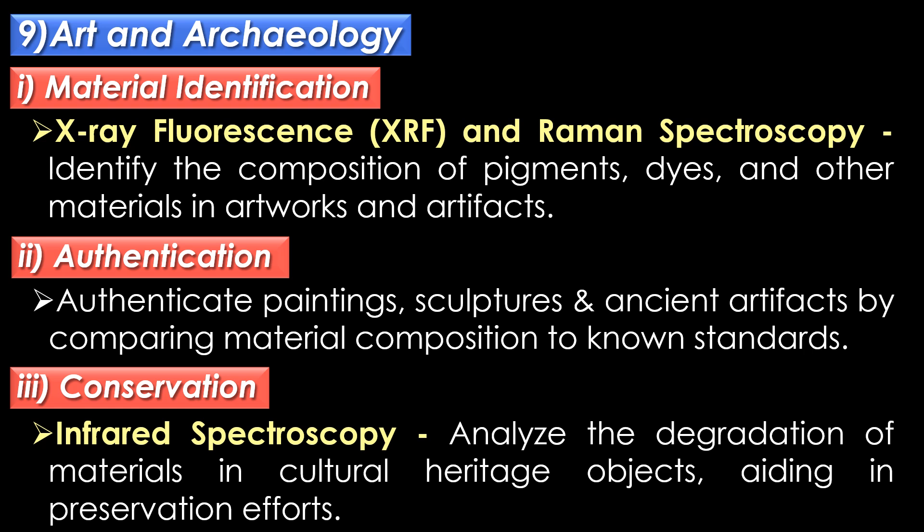In material identification, X-ray fluorescence and Raman spectroscopy help to identify the composition of pigments, dyes and other materials in artworks and artifacts. In authentication, spectroscopic methods are used to authenticate paintings, sculptures and ancient artifacts by comparing material composition to known standards.